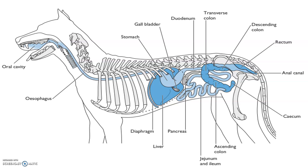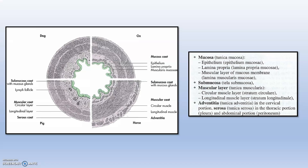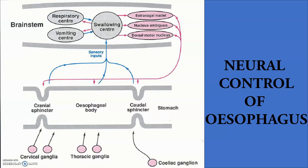You can appreciate in this diagram how the esophagus takes food and liquid from the oral cavity to the stomach. In the histological cross-section, you can see in the case of the horse there is a well-defined tunica adventitia — the outermost cover — and lymph follicles in the submucosa in the case of pig and also in lung. The neural control diagram shows the cranial sphincter, the esophageal body, the caudal sphincter, and the cardia, which is the start of the stomach.